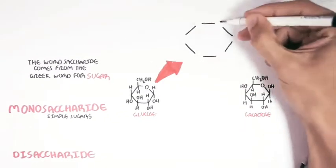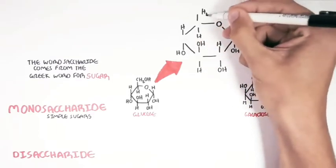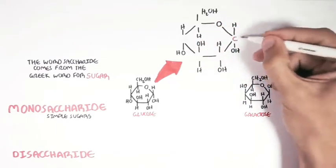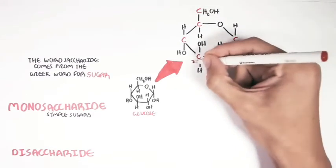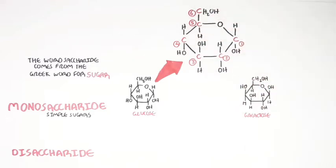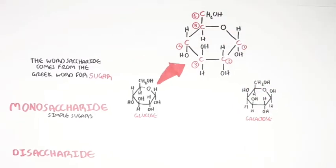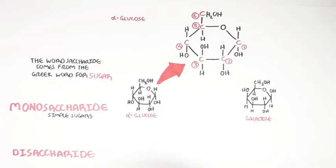C represents a carbon atom, and we can label the carbon atoms of glucose with numbers 1, 2, 3, 4, 5, 6 in this specific order. So glucose has six carbon atoms. This particular type of glucose is actually an alpha glucose because it has an alpha configuration.